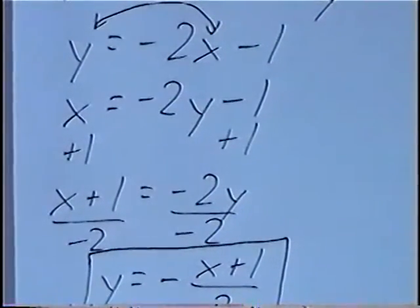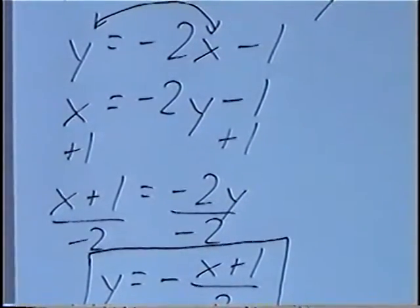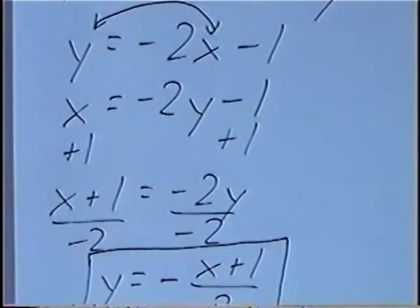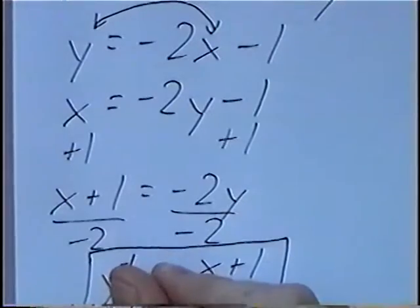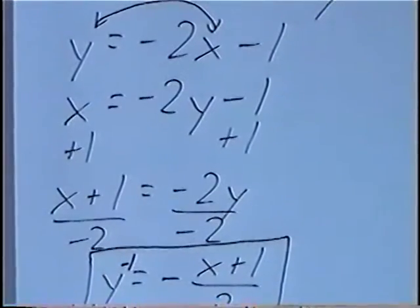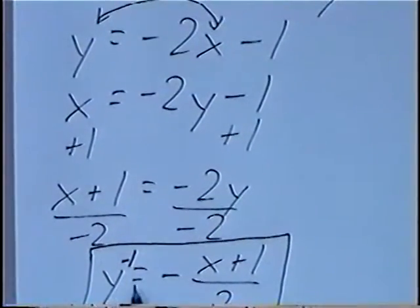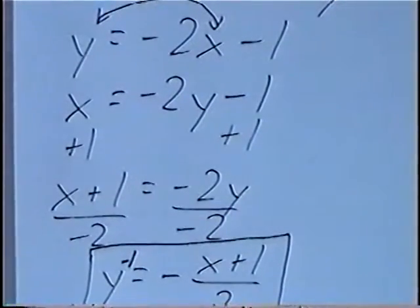To write this in proper notation as an inverse — since y was originally equal to negative 2x minus 1 — instead of the final answer being y, this will be the inverse of y, which we write with a negative 1 exponent. So y to the negative first power equals negative x plus 1 over 2.